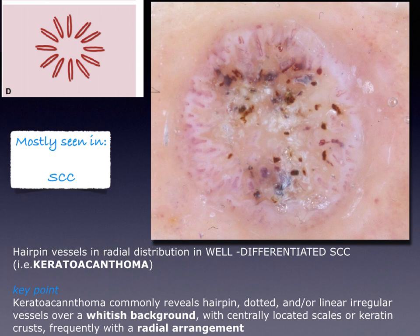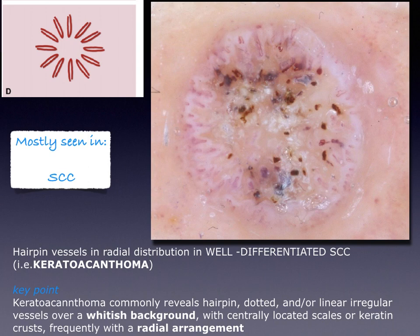Hairpin vessels can be seen in squamous cell carcinoma, where they show a typical radial distribution. They are more frequently found in the so-called keratoacanthoma, which is the well-differentiated squamous cell carcinoma according to the new definition, and they can be arranged at the periphery. They can be surrounded by a whitish background, and usually in the center of the tumor we have centrally located scales or keratin. Here we can see a typical example of these hairpin vessels located at the periphery, surrounded by a whitish halo, with a keratin mass in the center, in a raised and even nodular tumor.